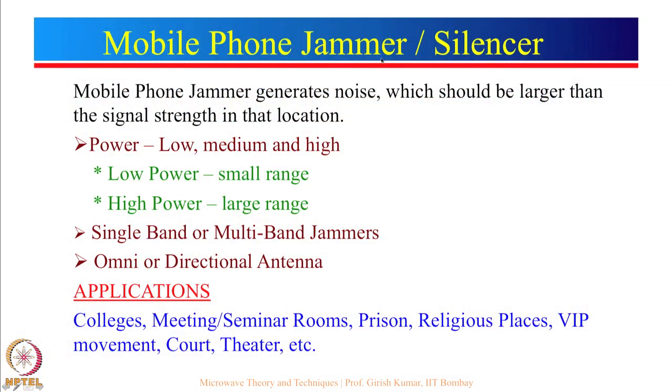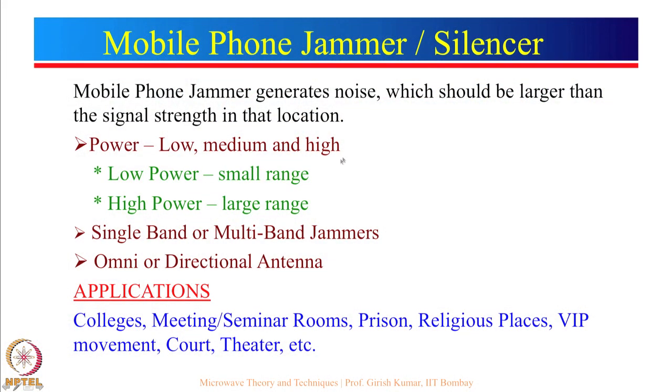When there are too many mobile phones, there is a requirement for a jammer — also called a silencer. A mobile phone jammer basically generates noise which should be larger than the signal strength at that particular location. If the noise is larger, the signal received by the mobile phone will get confused and hence it will show that there is no network available. There can be different types of mobile phone jammer: low power, medium power, high power. A low power jammer will have a small range; a high power jammer will have a larger range.